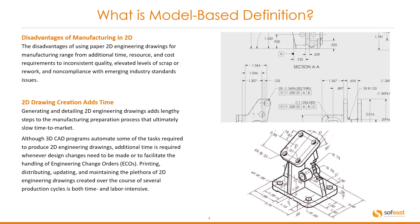The 2D drawing creation adds time. Generating and detailing 2D engineering drawings adds lengthy steps to the manufacturing preparation process that ultimately slows time to market. Although 3D CAD programs automate some tasks, additional time is required whenever design changes are made or to handle engineering change orders, or ECOs. Printing, distributing, updating, and maintaining 2D engineering drawings is time and labour intensive over several production cycles.